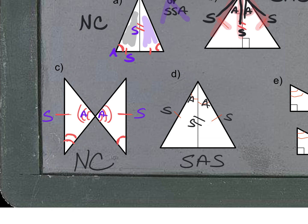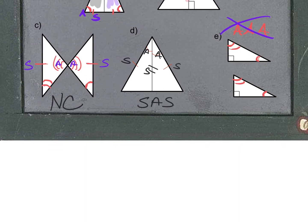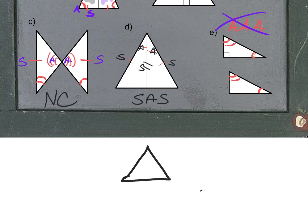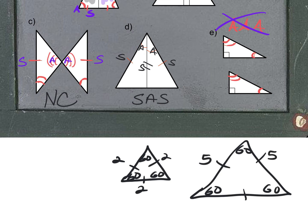For figure E, all the angles are marked as congruent, but there is no shortcut called angle angle angle that proves triangles congruent. If you had two equilateral triangles, both have 60-60-60 degrees, but one could be smaller and one bigger — same angles do not make triangles congruent. Having the same angles makes triangles similar, not congruent. This concept about similarity will come up later.